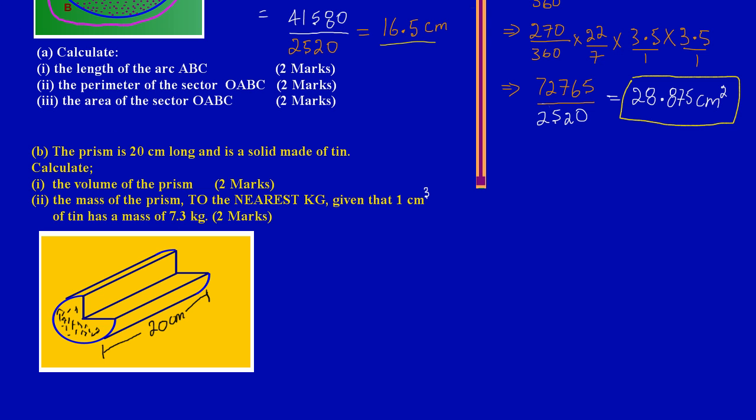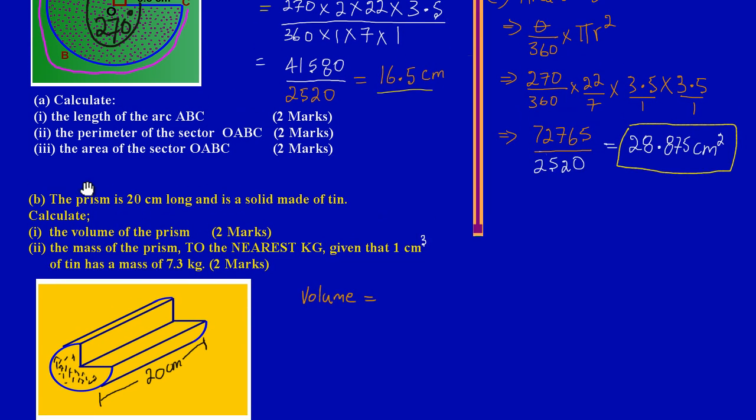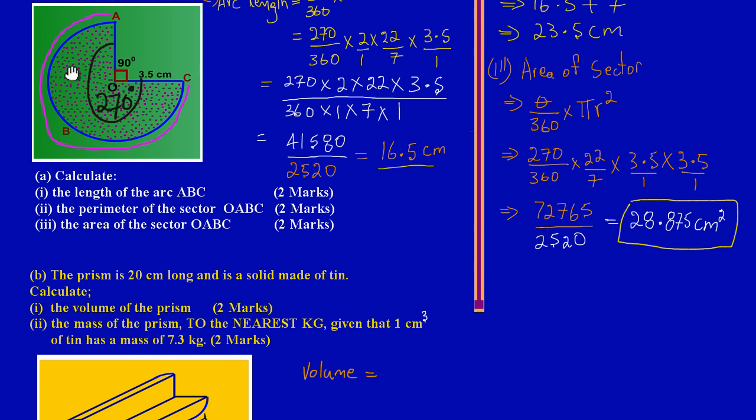To calculate the volume of this prism, I'm going to simply say the volume must equal 28.875, which is the area of the shaded region that we had—this shaded region here, that's the area.